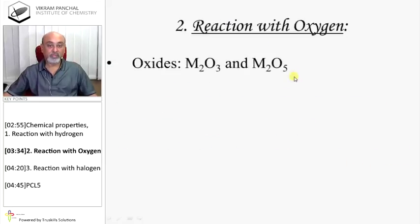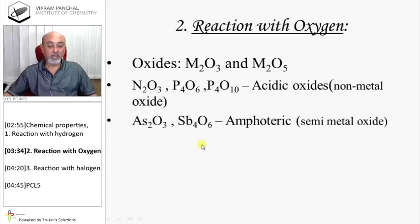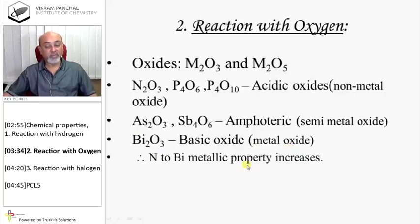Reaction with oxygen: These produce oxides like M2O3 and M2O5. N2O3, P4O6, and P4O10 are acidic oxides, meaning nitrogen and phosphorus are non-metals. As2O3 and Sb2O3 are amphoteric, showing arsenic and antimony are semi-metals. While Bi2O3 is basic oxide, meaning bismuth is metal. Therefore, nitrogen to bismuth, metallic property increases.